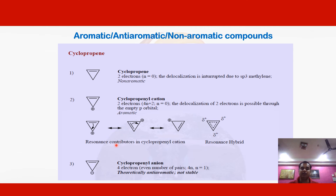Similarly, taking the example of cyclopropenyl anion, we have four electrons — two pi electrons from one pi bond and two electrons from the negative charge. Instead of following the 4n+2 rule, it follows the 4n rule. Since it is also cyclic in nature, we can say it is an example of anti-aromatic compound.